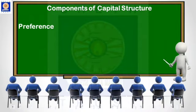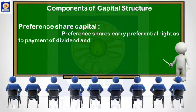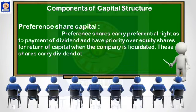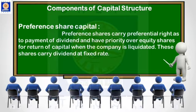Now let us see the second source of capital — preference share capital. Preference shares are those shares which are not equity shares. As the name suggests, preference means priority. An investor who invests in preference share capital is called a preference shareholder. Preference shareholders get priority in receiving dividends; they receive dividends before equity shareholders at a fixed rate, and then equity shareholders receive dividends at a fluctuating rate.